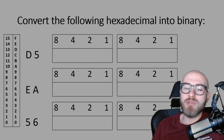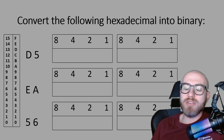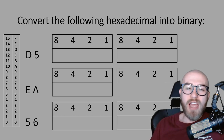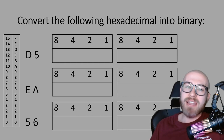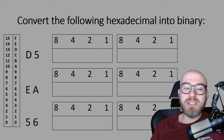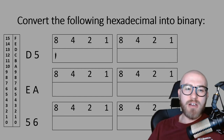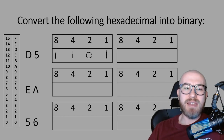Now quite often in your exam it will ask you to convert hexadecimal values into binary or denary. Let's first do it into binary. We've got D and 5 — look at those as two separate values. I'd always recommend drawing out the conversion chart in your exam. From the conversion table, D is the equivalent of 13, so we need to write 13 in binary: we need the 8, the 4, not the 2, and the 1 — that is 13 in binary.